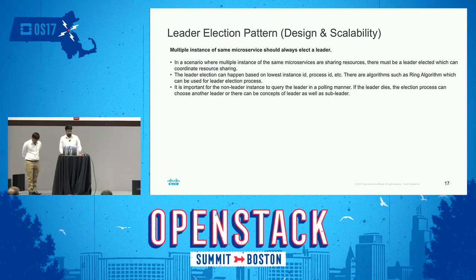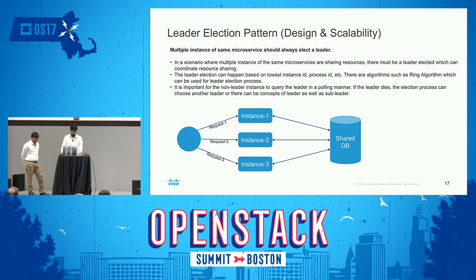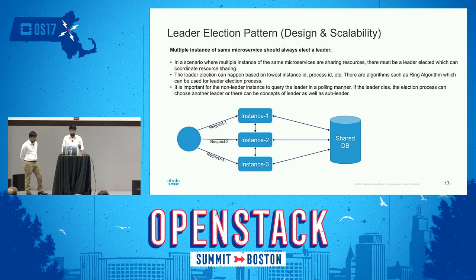Now moving to regular design patterns related to design and scalability. The first is the leader election pattern: multiple instances of the same microservice should always elect a leader. When multiple instances share the same resource, you need someone to coordinate the resource-sharing process. Out of these instances, one is selected as the leader — based on lowest instance ID, lowest process ID, or other algorithms. Importantly, non-leader instances must keep polling the leader, because if the leader goes down, the system goes down. An approach is to have a leader and a sub-leader as backup.